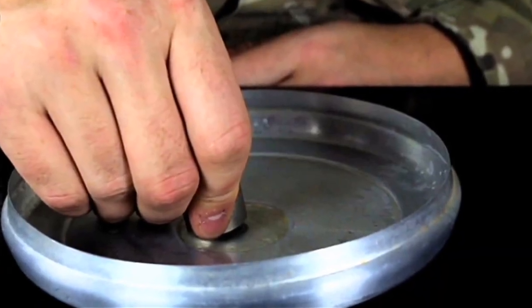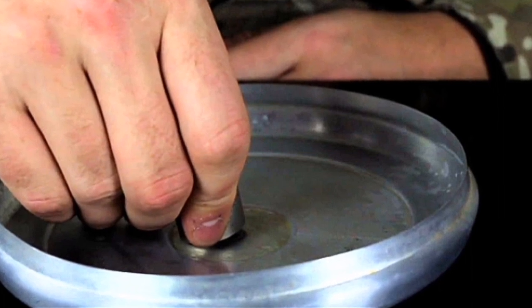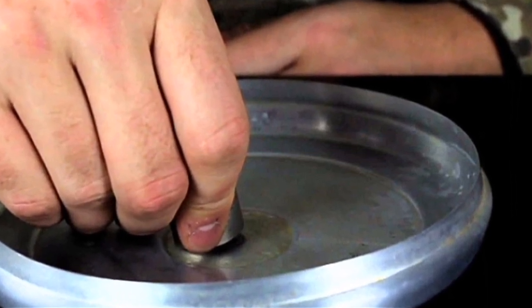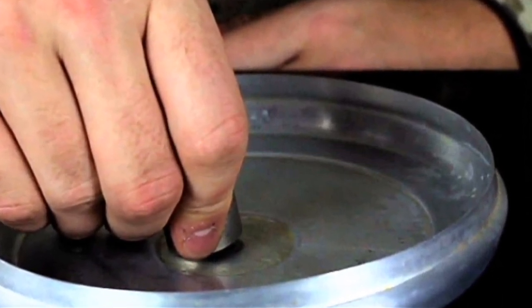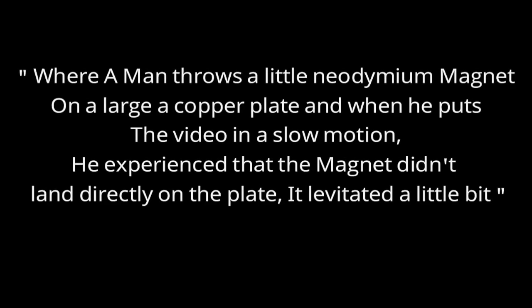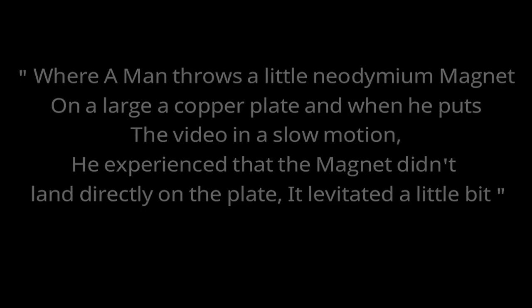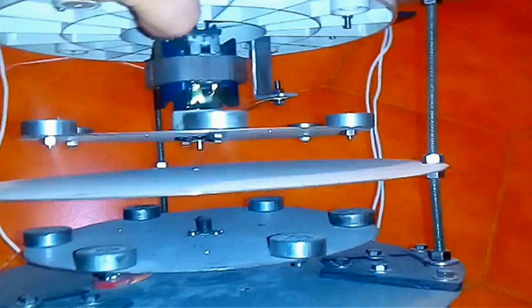Watch this. When you take a magnet and rub it fast on a copper or aluminum plate, you will directly feel the force — kind of like a repulsion force. I actually saw that in a video where a man throws a little neodymium magnet on a large copper plate, and when he puts the video in slow motion, the neodymium didn't land directly on the plate — it levitated a little bit.